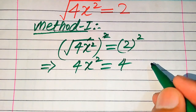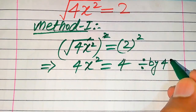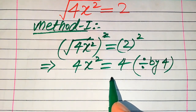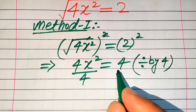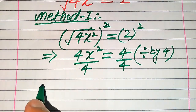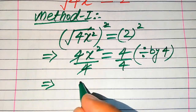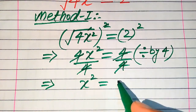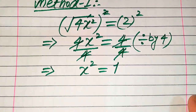2 squared becomes 4. Because we are solving for the values of x, we need to divide both sides by 4. When you divide each term on both sides by 4, this 4 is cancelled out by this 4 and we get x squared equals — this 4 is cancelled out by this 4 — and we get only 1.